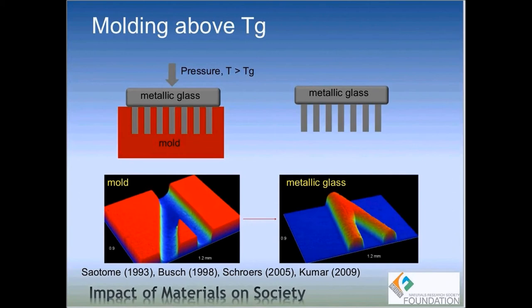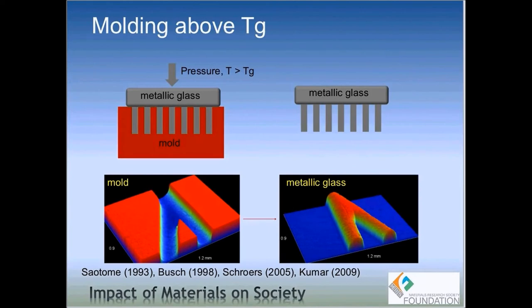Metallic glasses can be molded into complicated shapes by a technique similar to what we use for window glass. The principle is: a red-colored box (the mold) is a template made from any rigid material such as silicon, alumina, or another metal. A disc of metallic glass is placed on top, and the entire assembly is heated to a temperature above the glass transition temperature of the metallic glass. At that temperature, the metallic glass starts flowing like a viscous liquid, and by applying a little pressure it fills into the mold cavity — allowing us to make any size and shape.